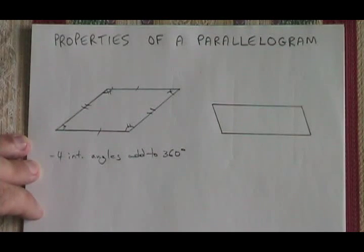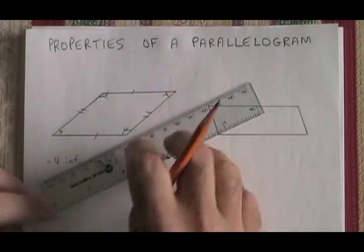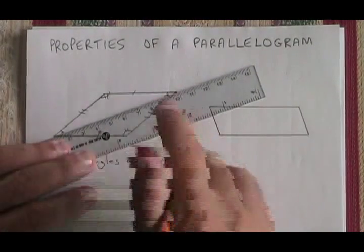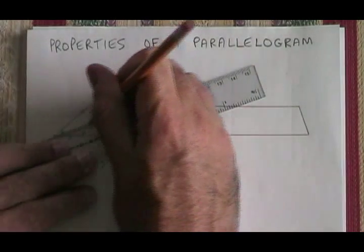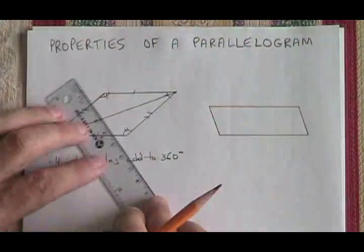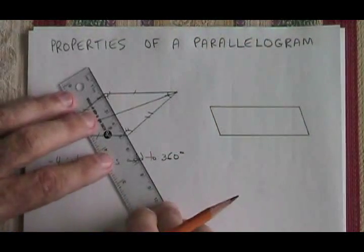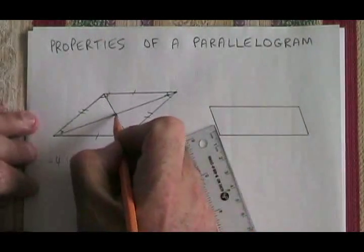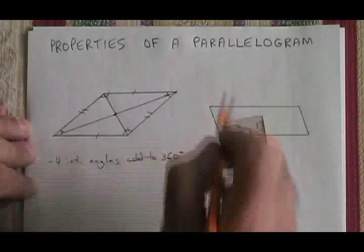It has two diagonals that intersect at their midpoints. I will show that by drawing the diagonals. There's one of the diagonals, and here's the other. This is the midpoint of both the short diagonal and the long one.